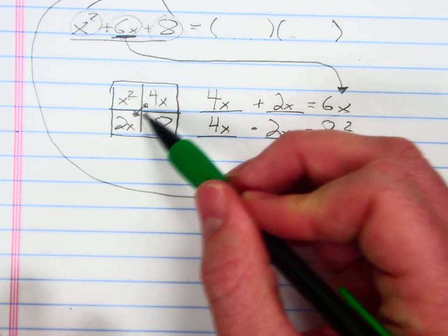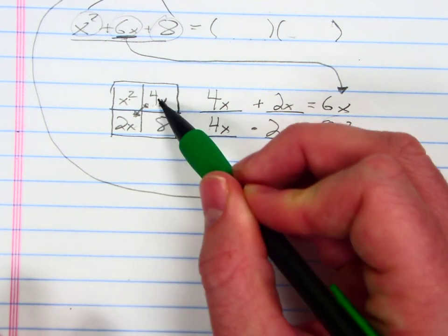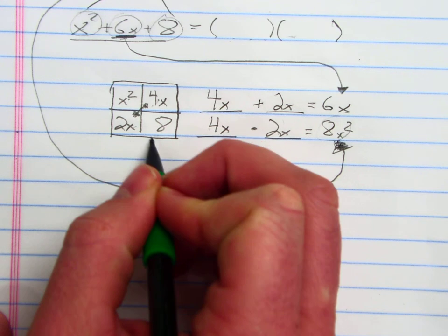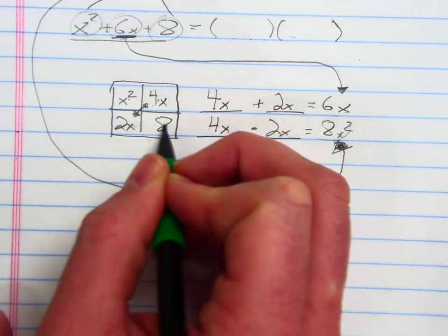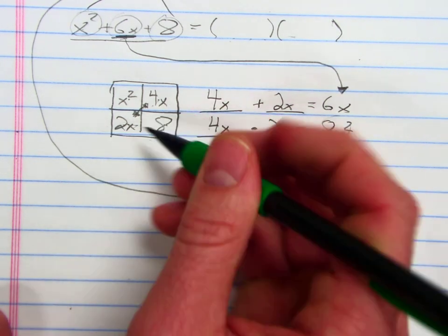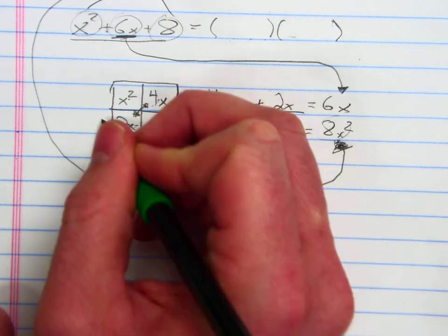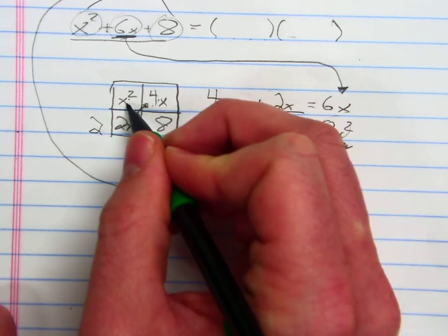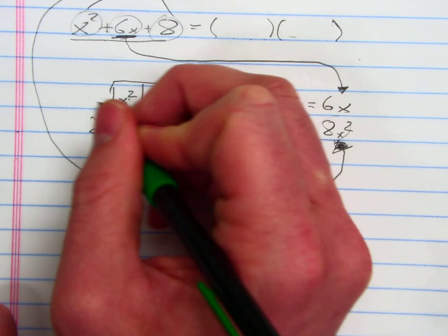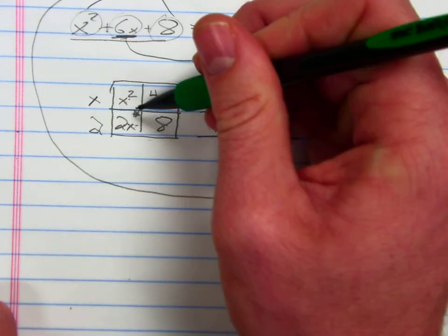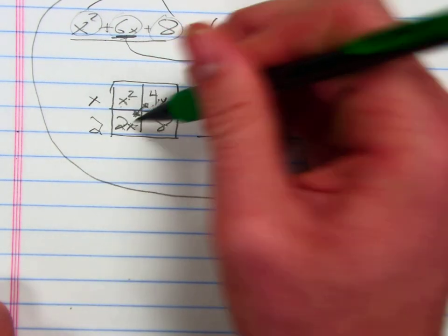So I just want to factor the greatest common factor out to the left. The greatest common factor of 2x and 8 is 2. The greatest common factor of x squared and 4x is x. The greatest common factor of x squared and 2x is x, and the greatest common factor of 4x and 8 is 4.